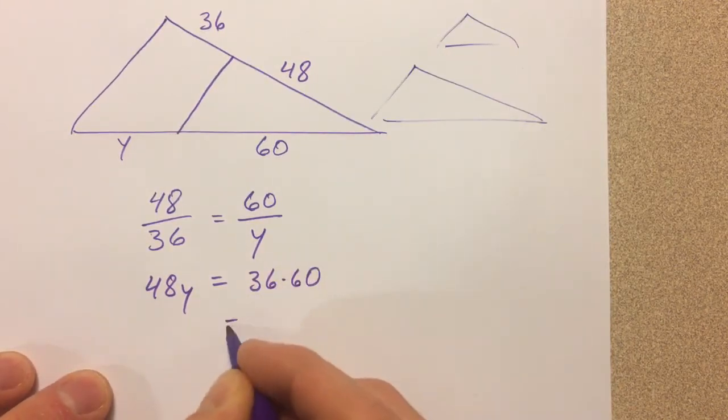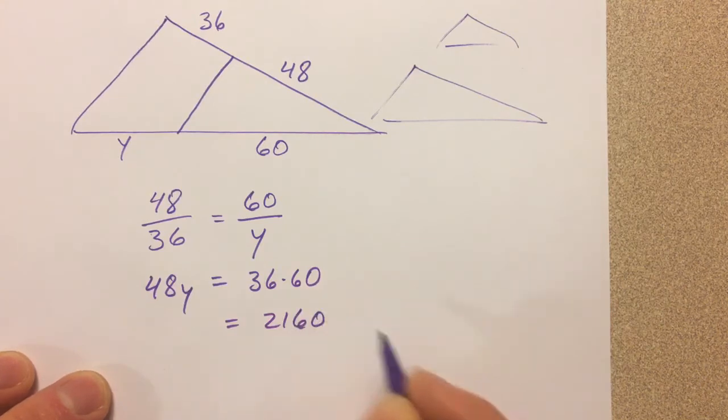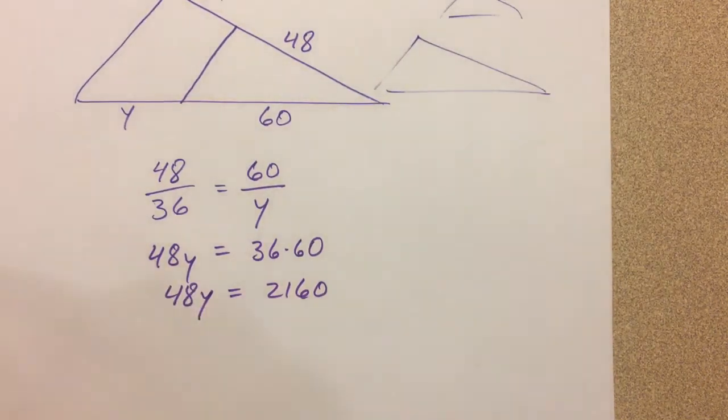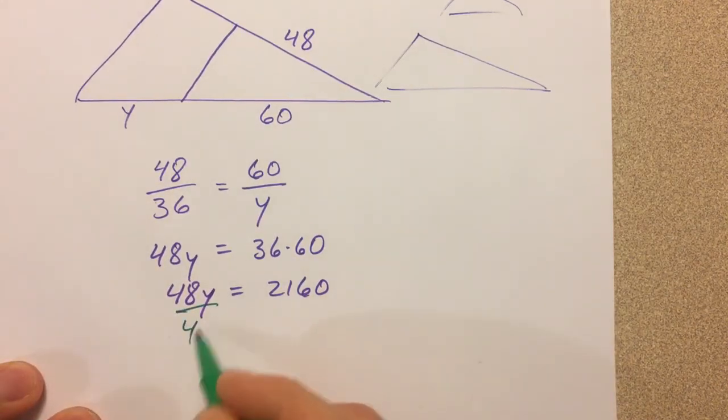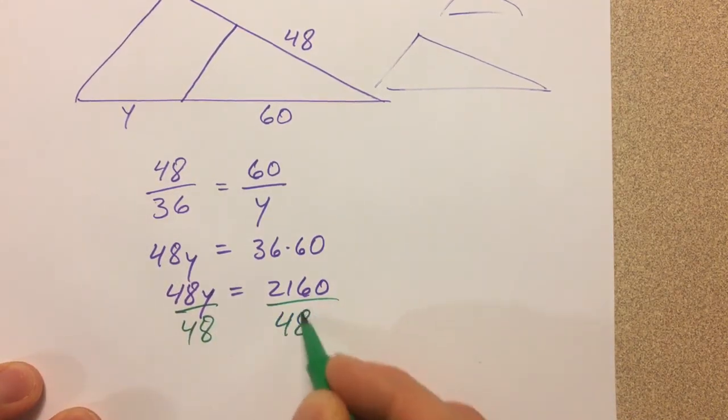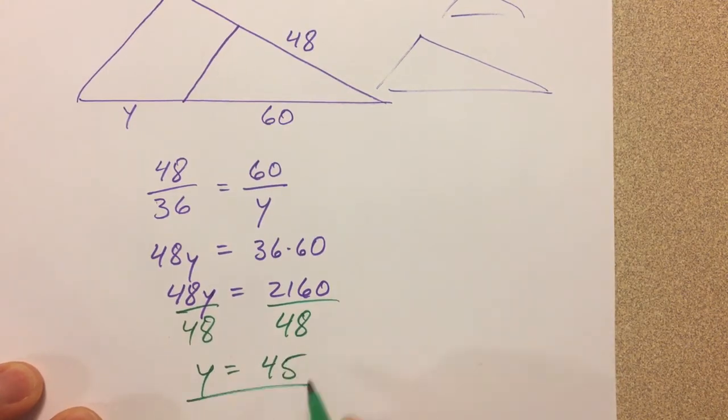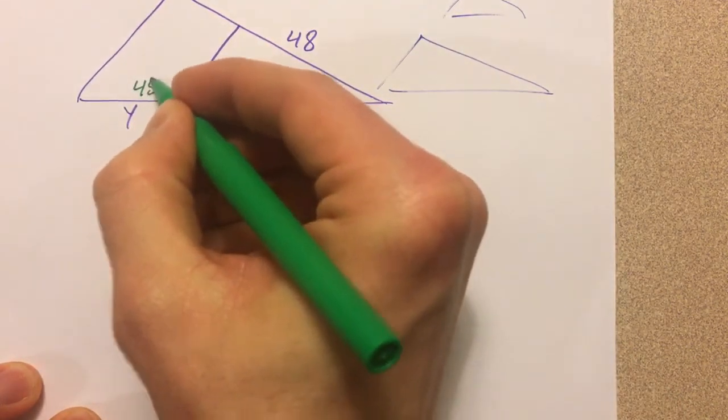36 times 60 is 2160. I've got dividing by 48, and you get y of 45. And so this is 45 right here.